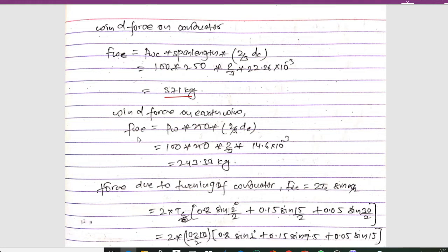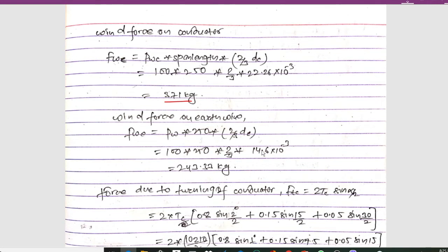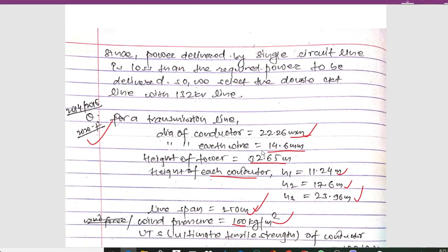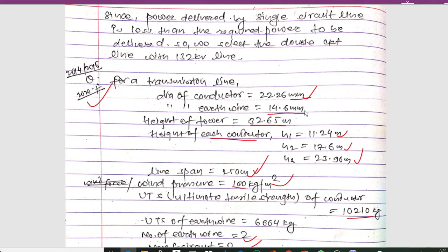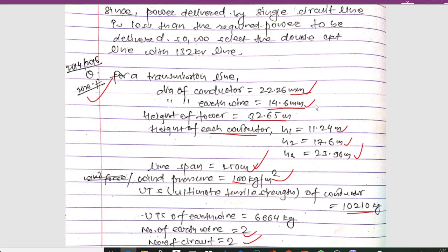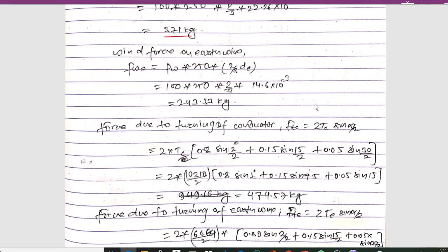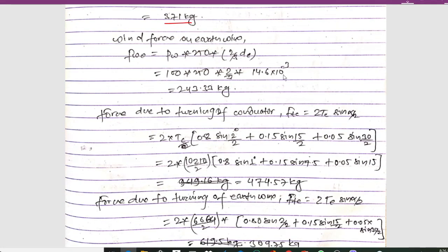Similarly, wind force on earth wire (FWE) is calculated as: FWE = Pw × span length × (2/3) × D. Using Pw = 100, span = 250 m, and earth wire diameter D = 14.6 mm, we get FWE = 243.33 kg.